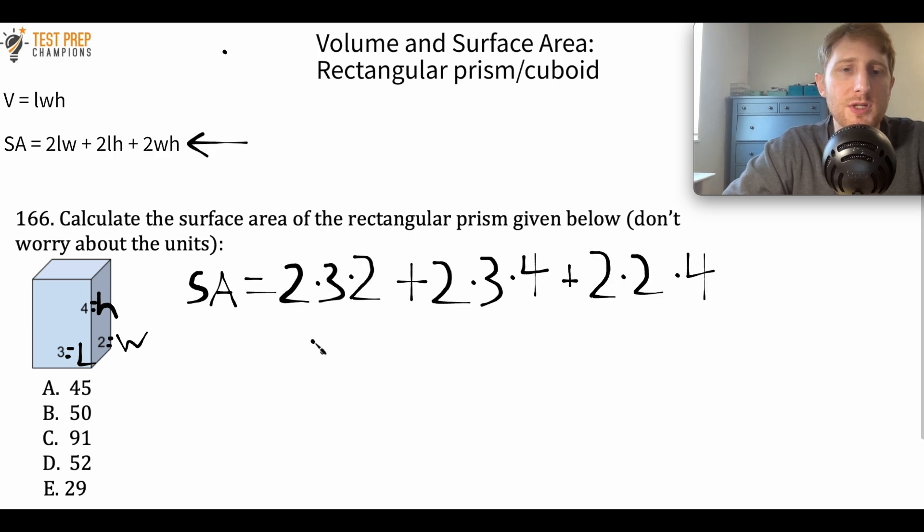We should have two times three times two plus two times three times four plus two times two times four. Again, this is just a matter of being careful to make sure that we put the numbers into the formula the right way. If we put all this into our calculator, we'll see that 52 is the correct answer. So D is the right answer here.